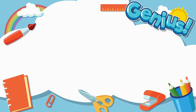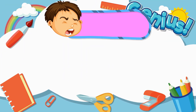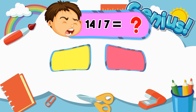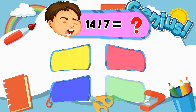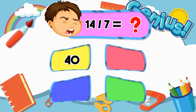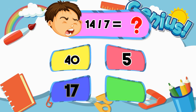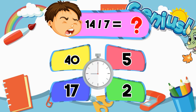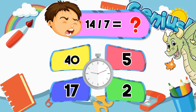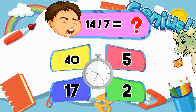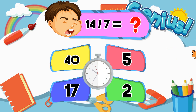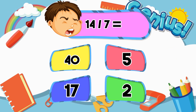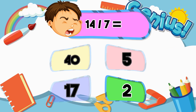What is 14 divided by 7? 14, 5, 17, 2. The answer is 2.